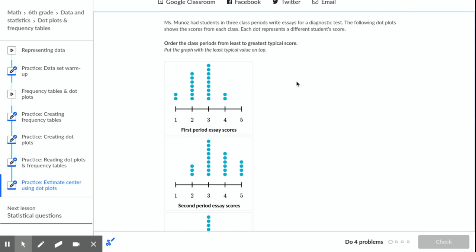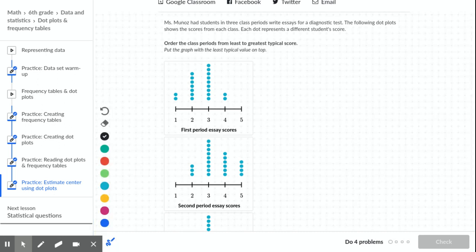Ms. Munoz has students in three different class periods write essays for a diagnostic test. The following dot plots show the scores from each class. Each dot represents a different student's score. So in our directions here, it wants us to order the class periods from least to greatest typical score. And in these, it talks a lot about typical.